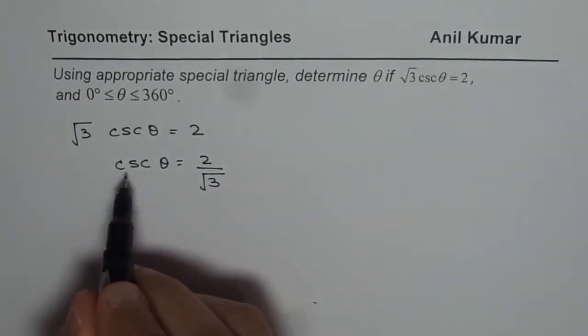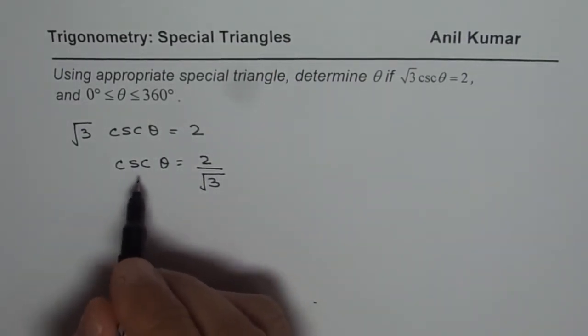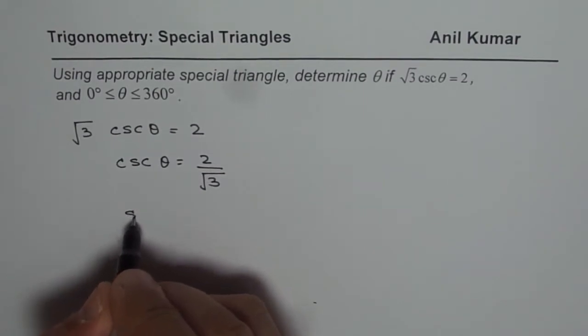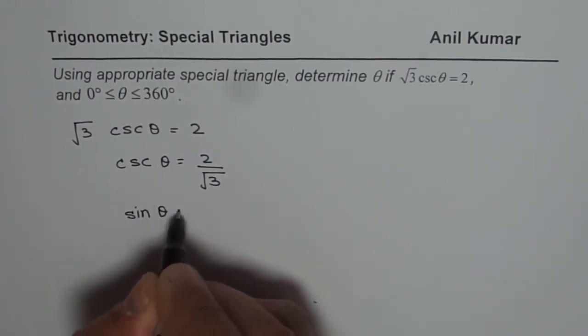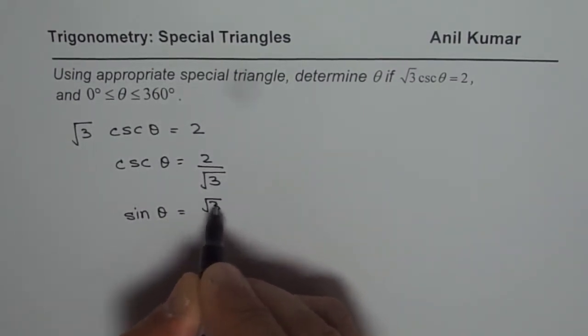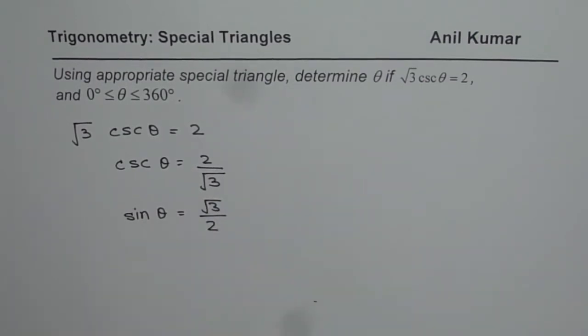Or, sometimes you can write this as sine θ. Cosecant is 1 over sine, so you can write this as sin θ = √3/2. It is a good idea to write it in the primary trigonometric ratios.